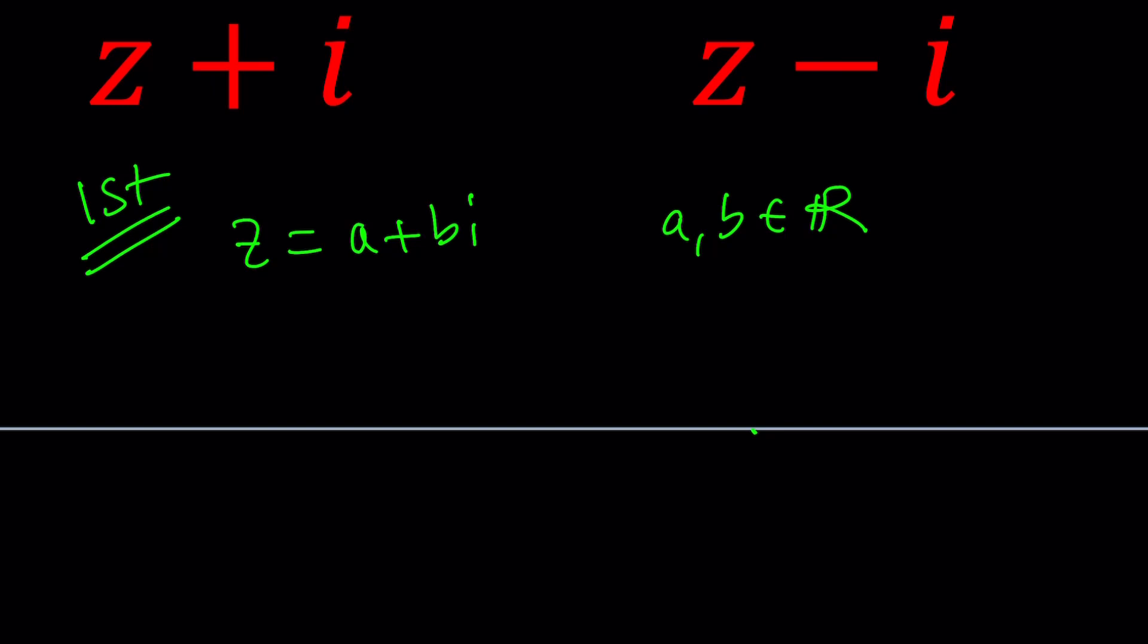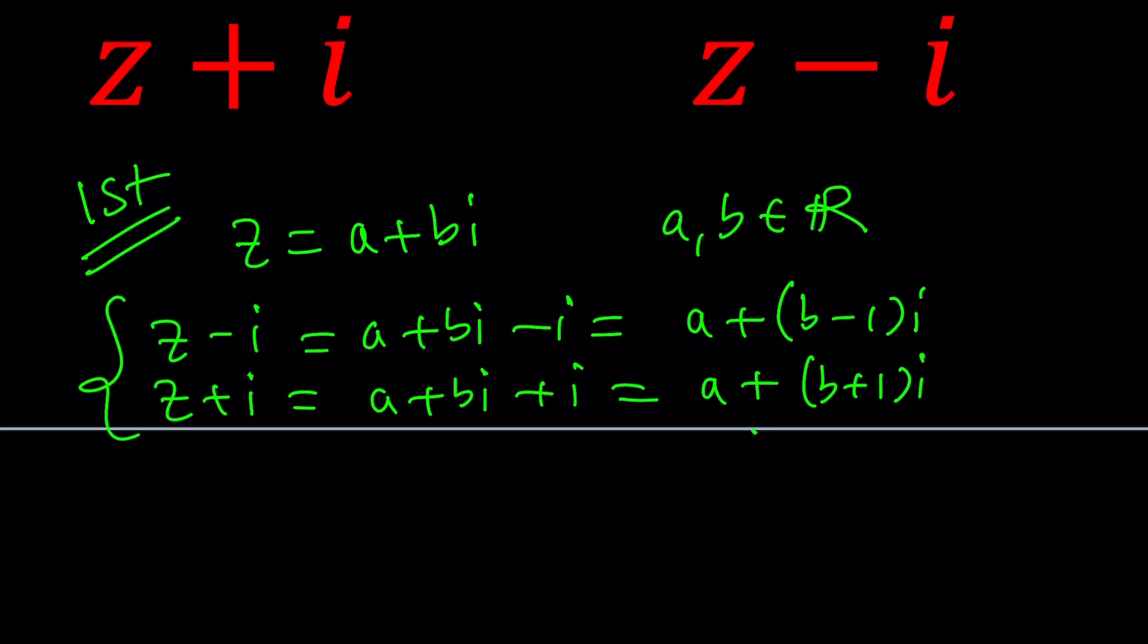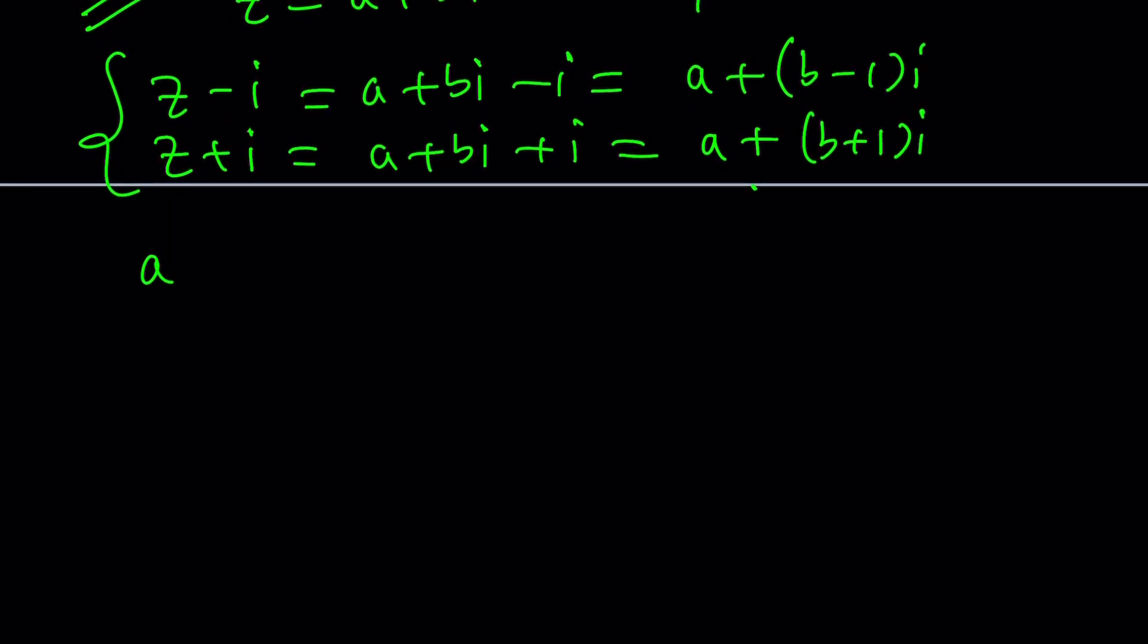Now we're going to plug it in. What is z minus i? Subtract i from this, giving you the imaginary part changed to b minus 1. If you add i to both sides, you'll get a plus bi plus 1i, written as a plus b plus 1 times i. Now we can plug these expressions into our equation and simplify. z minus i is a plus the quantity b minus 1 times i, divided by z plus i, which is the same with a plus sign inside. That equals z, which is a plus bi, divided by z minus bi, which is the numerator on the left-hand side. So far so good.